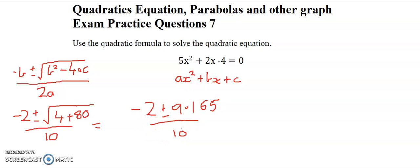So let's look at the first part. The first part is negative 2 plus 9.165 divided by 10. So our first answer is 0.7165.